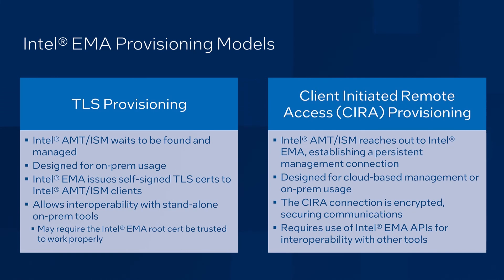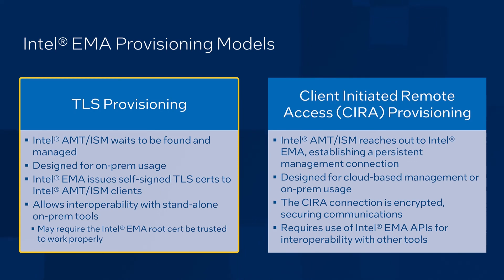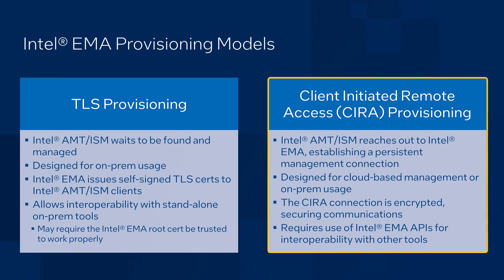I'd like to talk about the provisioning modes for our hardware-level manageability. Intel Endpoint Management Assistant supports two communication modes with Intel AMT and ISM: CIRA mode, which we talked about earlier, and TLS mode. TLS mode provisioning is designed primarily for on-prem usage models. Intel EMA has its own built-in certificate authority and will issue TLS certificates automatically when configuring hardware manageability in this mode. TLS mode also leaves local network management ports open on devices, allowing for easy inter-operation with other management tools that can work directly with Intel AMT or ISM. The one catch is that Intel EMA must route management commands through another device running the Intel EMA agent on the same IP subnet, so you need at least two devices with one of them up and running the Intel EMA agent for this to work.